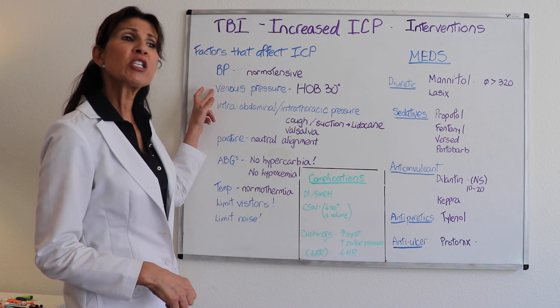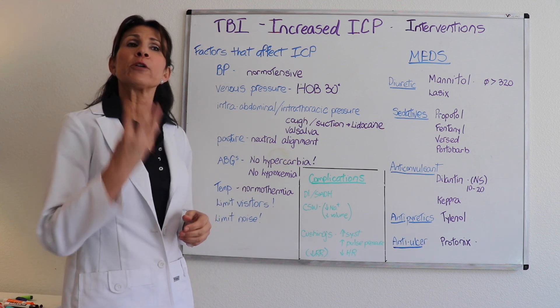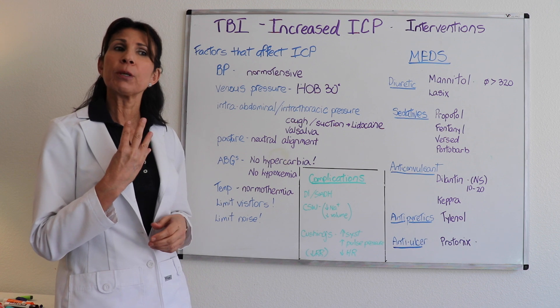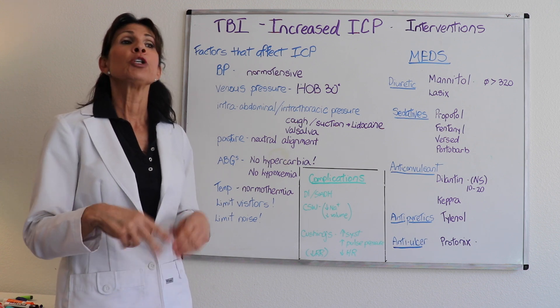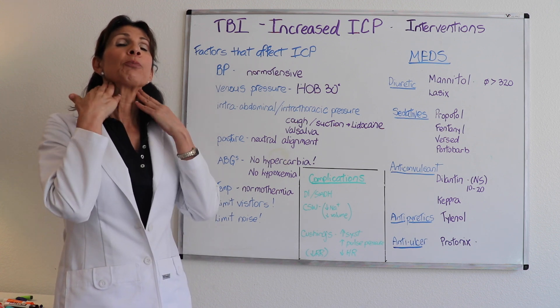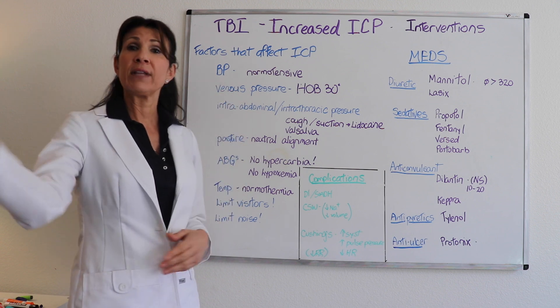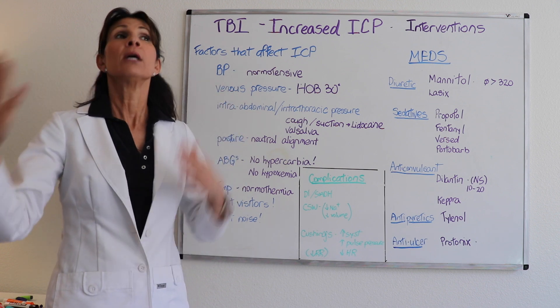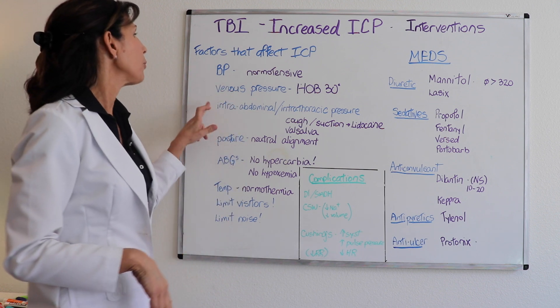Venous pressure — what does that mean? There are four arteries that perfuse the brain, but there are only two veins that drain it. So you want to make sure you promote venous drainage by having the head of the bed at 30 degrees to promote venous outflow.